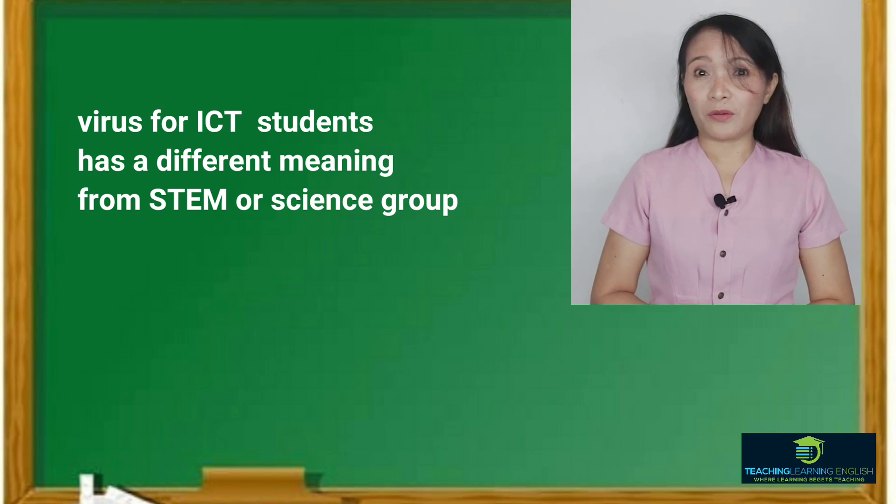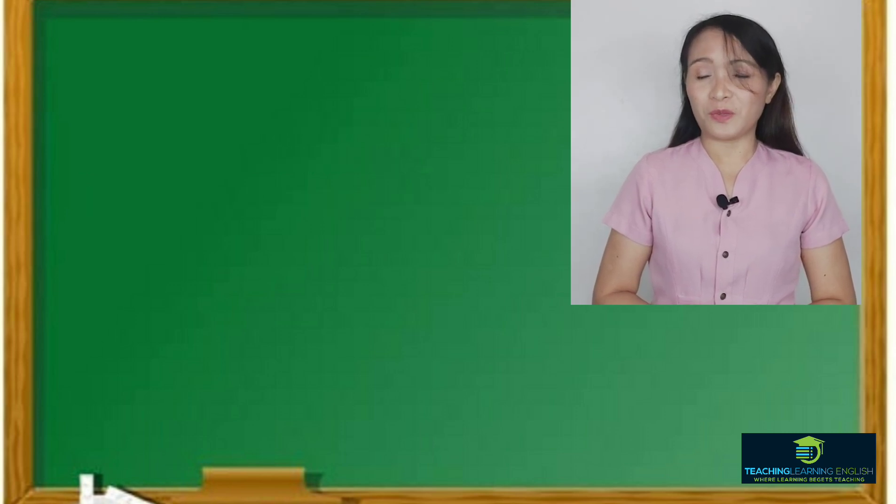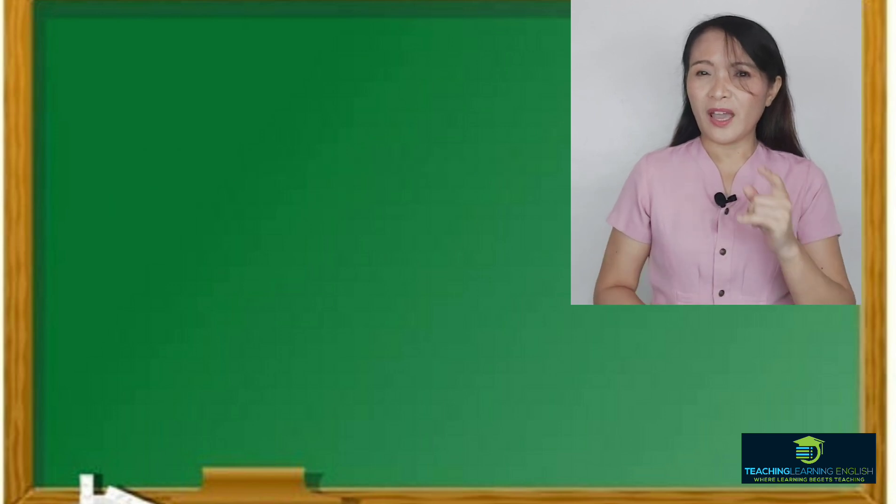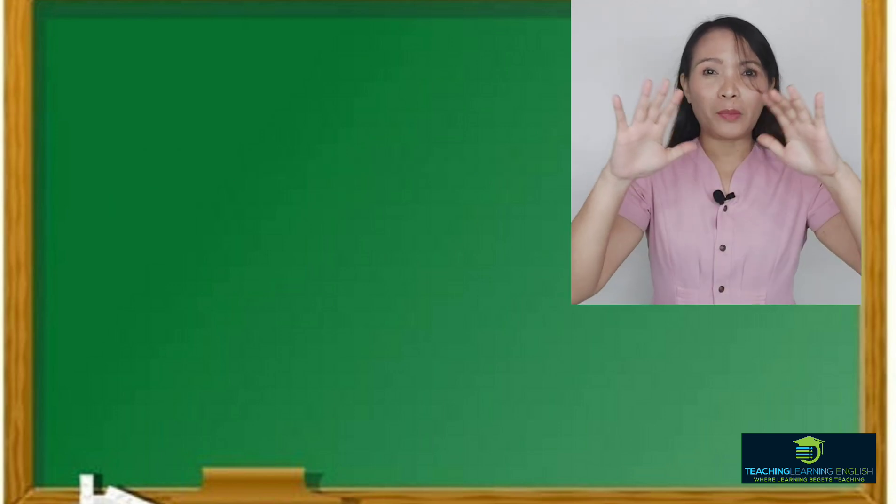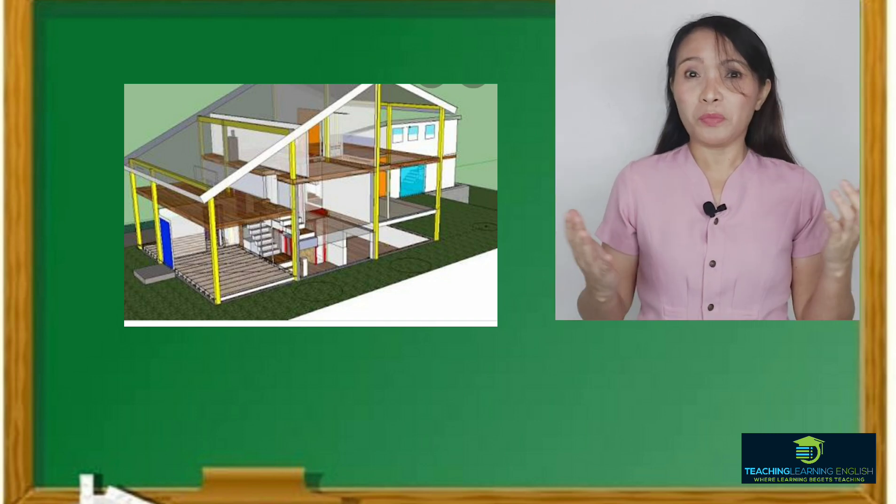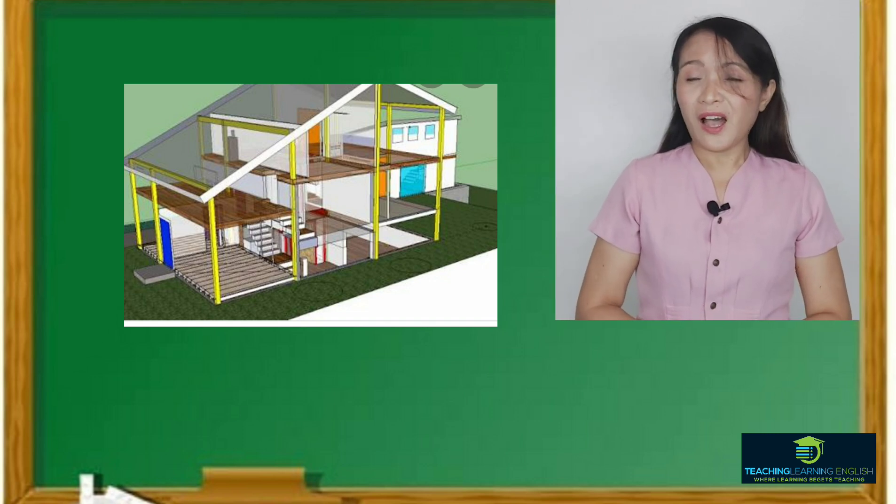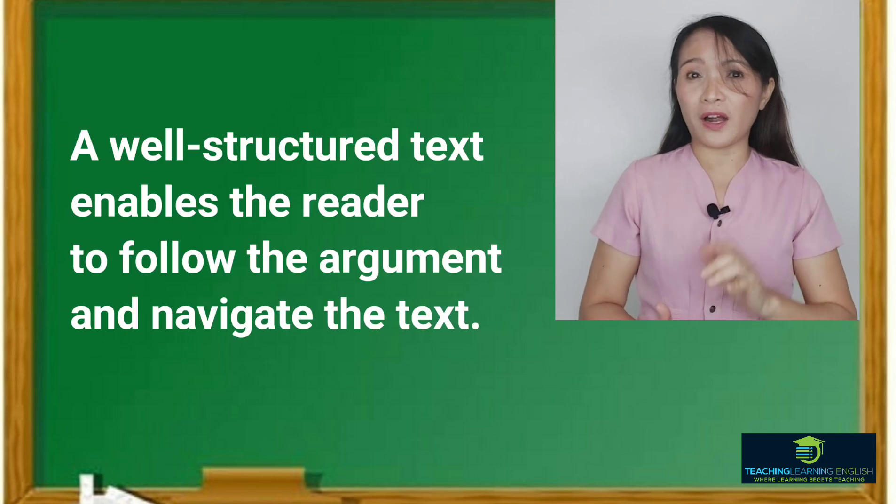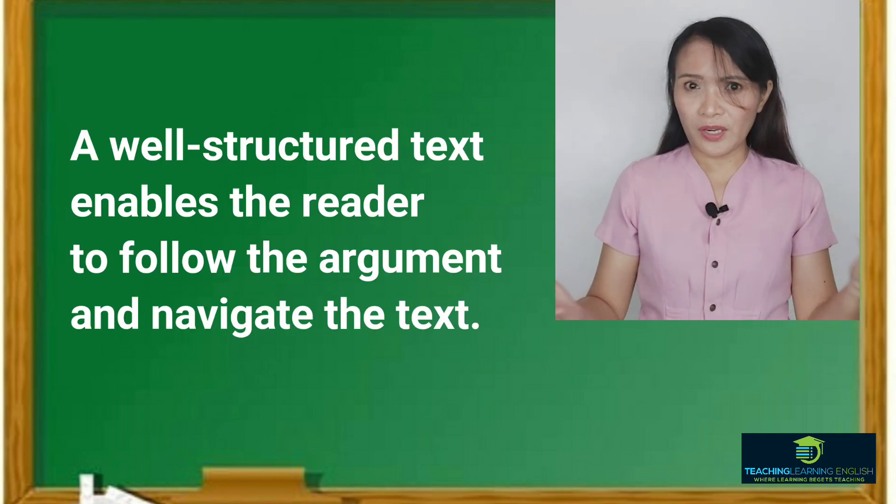In order to be good in academic writing, you should know the specific styles and structures for your discipline. Academic writing is just like building a house. You need a solid foundation as you make a well-structured house. A well-structured text enables the reader to follow the argument and navigate the text. It means that it is logical and organized.